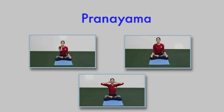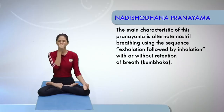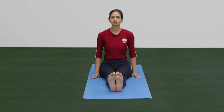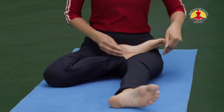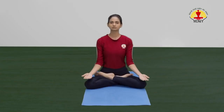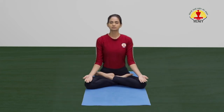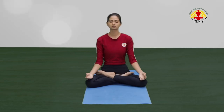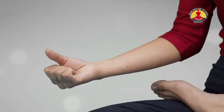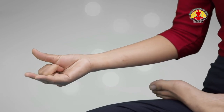Pranayam. Nadi Shodhana Pranayam or the alternate nostril breathing. Start with sitting in any comfortable posture. Breath should be slow, steady and controlled. Keep the spine and head straight with eyes closed. Relax the body with a few deep breaths. Keep the left palm on the left knee in Jnana Mudra and the right hand in Pranayam Mudra, with the middle and index fingers folded.